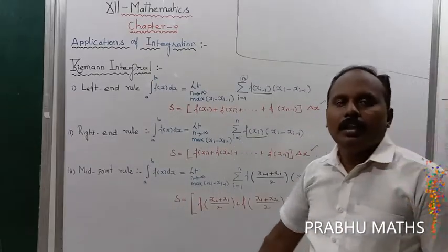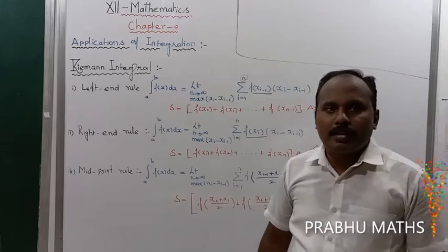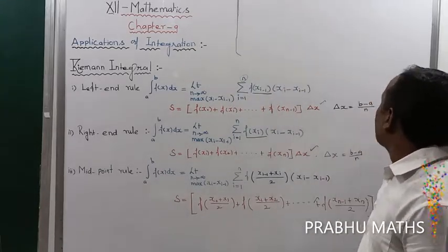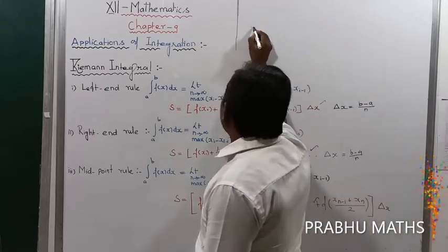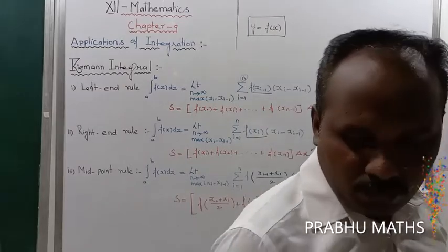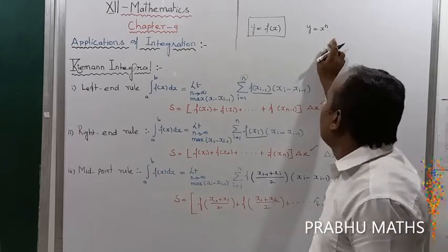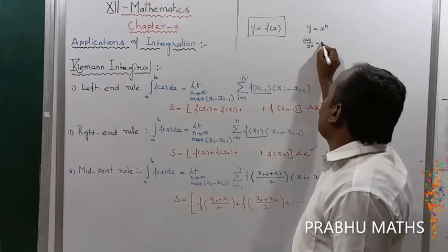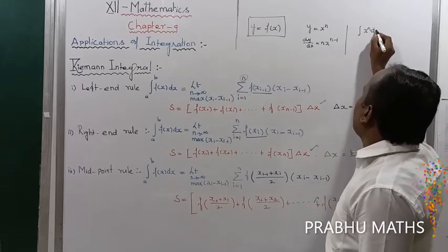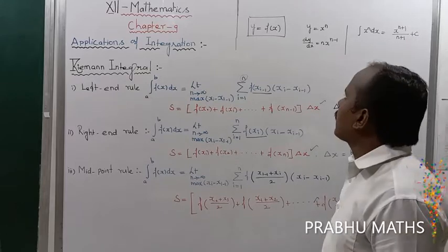We studied integrations clearly in 11th standard with many formulas. In 11th standard, integration was fully the indefinite integral — that is, integration with no limit value. The general form of a function is y = f(x). For example, y = x^n. Differentiating gives dy/dx = n times x^(n-1). For integration: the integral of x^n dx equals x^(n+1) divided by (n+1) plus C.